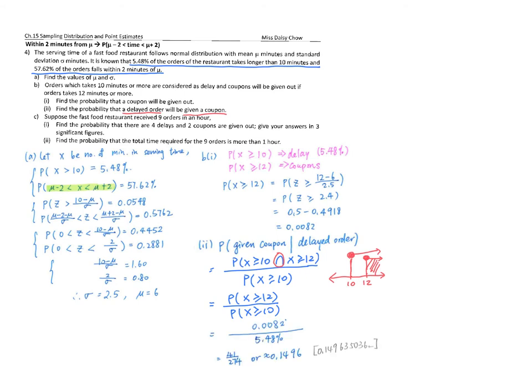Part C: Suppose a fast food restaurant receives 9 orders in an hour. Part C1: Find the probability that there are 4 delays and 2 coupons are given out. Give your answer in 3 significant figures. First, let's break down this statement. There are 9 orders total.